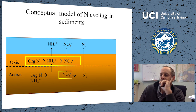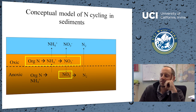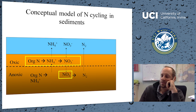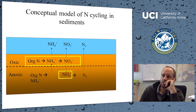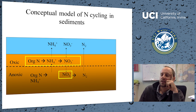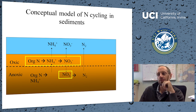Starting with a conceptual model of the nitrogen cycle: the blue part is the water column, and the brown is the sediment, subdivided into two zones by a dashed horizontal line — the oxic zone and the anoxic zone. The oxic zone is typically a few millimeters thick, and we can think of organic nitrogen being broken down to ammonia there.